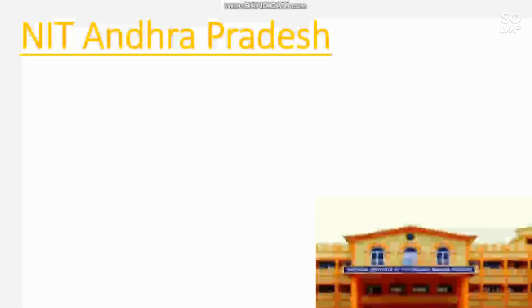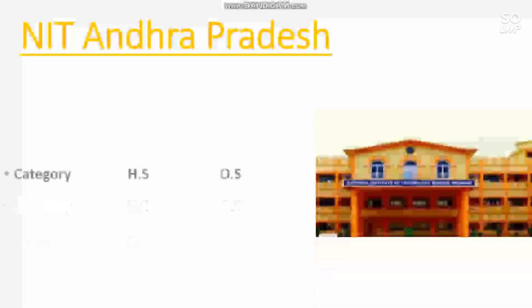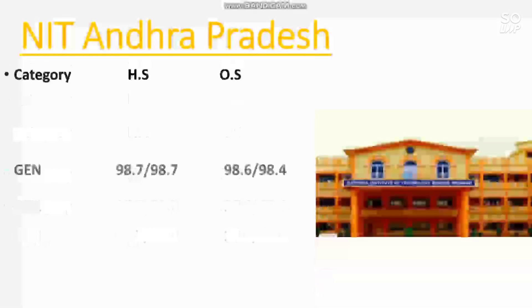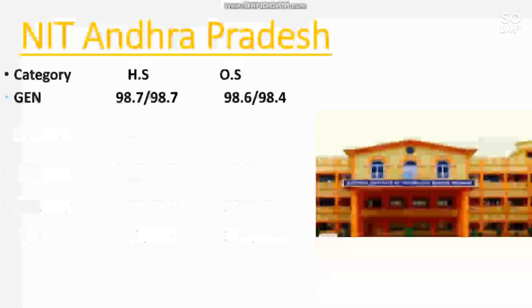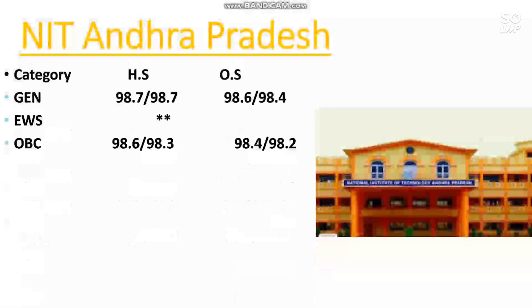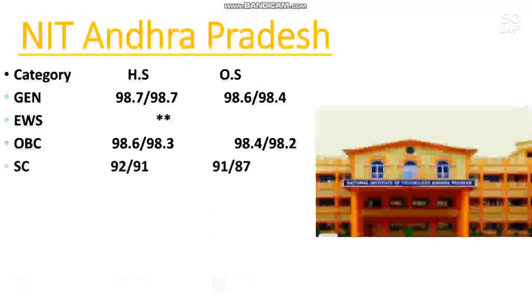The next is NIT Andhra. The cutoff for General is 98.6 and 98.4 percentile. For EWS, no seat. OBC requires 98.4 and 98.2 percentile. For SC, 91 and 87 percentile. For ST, 90 percentile is required.